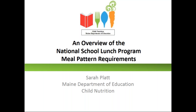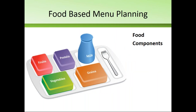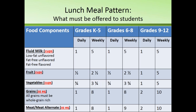Let's get started with an overview of the National School Lunch Program meal pattern requirements. With the National School Lunch Program, we use a food-based menu planning process, meaning we plan meals based on five food components. These are food components that must be offered to all students every single day for lunch: you must offer milk, fruit, vegetables, grains, and meat or meat alternate components every single day at lunch.